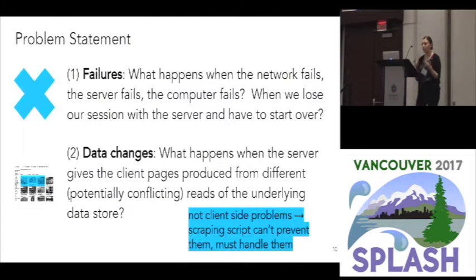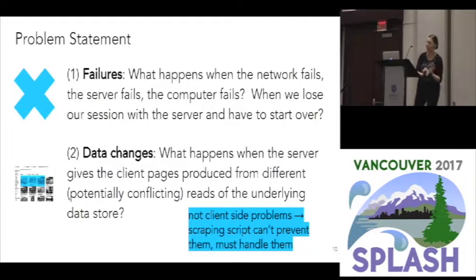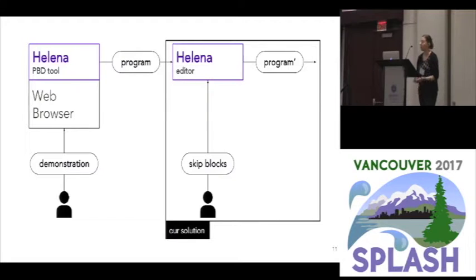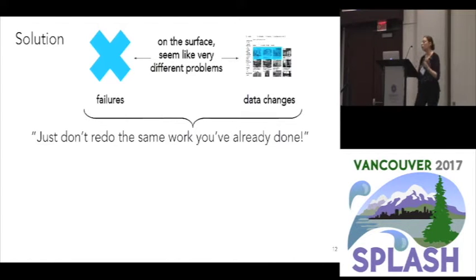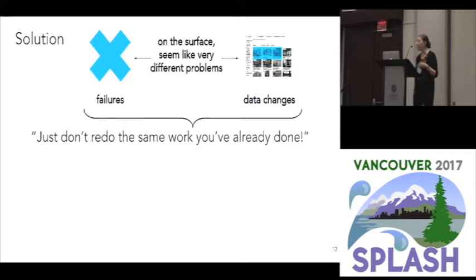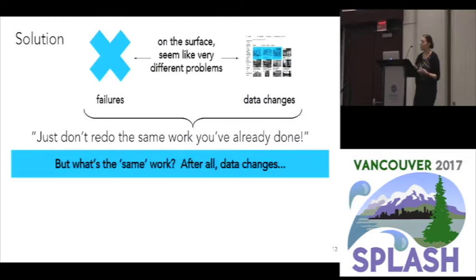What I want you to notice about these problems is they are not client-side problems — they are not problems with the scripts we're producing. The scraping script can never prevent the server from going down, the network from going down, or the server from serving whatever it wants. So if we can't prevent that from happening, we have to handle it gracefully. That's what we did: we introduced a construct called the skip block, and asked users to insert skip blocks into their Helena programs. It might seem surprising that we're fixing two different problems with one construct, but all we really want to tell the script is: don't redo the same work you've already done. Failures will happen — that's okay — what's annoying is having to repeat all that work. Same deal with data changes: if you get some duplicates in your Craigslist scrape, not a big deal, but repeating the work is what we want to avoid.